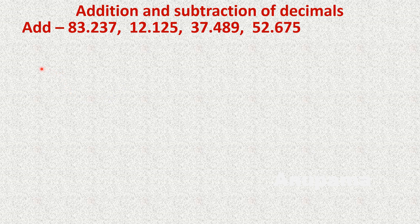First we will write the decimal number 83.237. We know that 3 is at the ones place and 8 is at the tens place — these are the whole number parts. Then there is the decimal point, followed by the tenths, hundredths, and thousandths places. All of these digits are the decimal part.